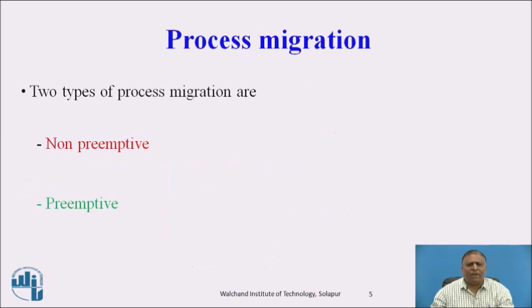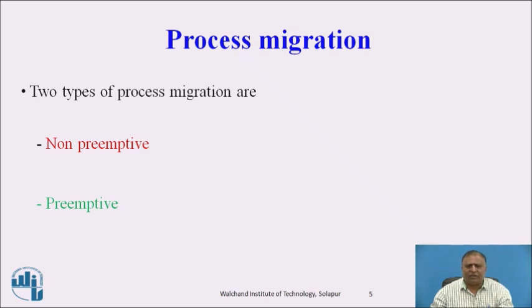There are two types of process migrations: non-preemptive and preemptive. Non-preemptive process migration migrates a process before it starts execution. Preemptive migration means a process migrates during its execution.